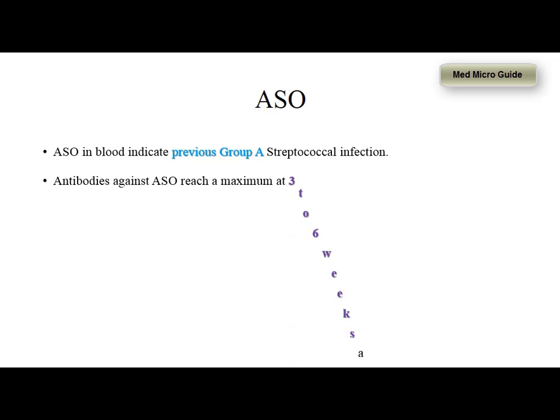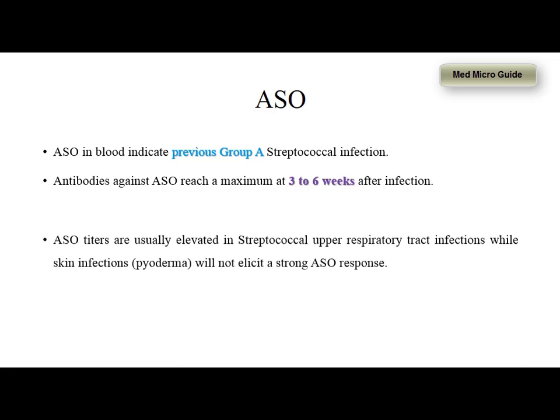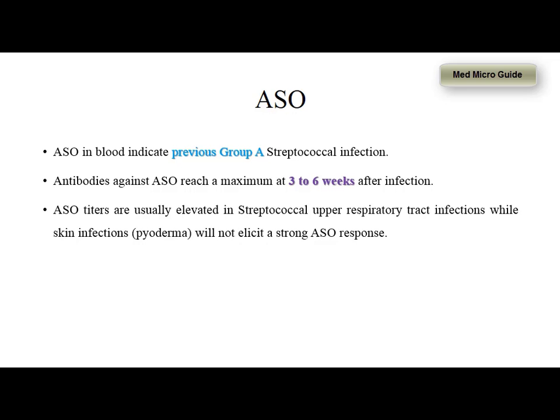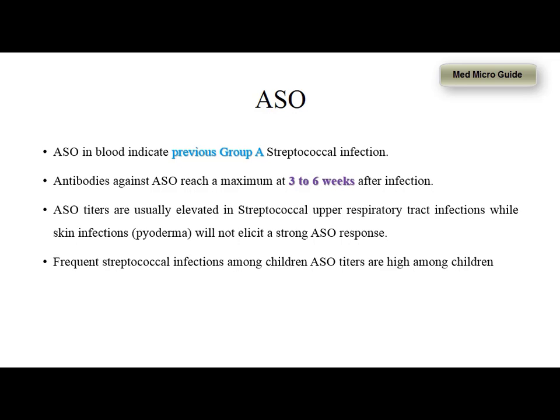The non-suppurative complications of group A streptococci, like acute rheumatic fever and post-streptococcal glomerulonephritis, occur after 3 to 6 weeks of infection. The ASO titers are usually elevated in streptococcal upper respiratory tract infections, while in skin infections like pyoderma, there will not be much elevation in the ASO response. The normal titers of ASO will be high among children because of the frequent streptococcal infections.